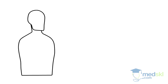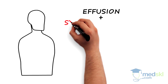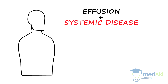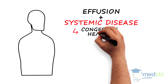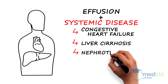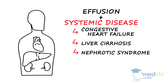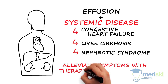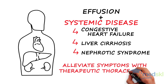If the patient presents with effusion and has a known systemic disease associated with an imbalance in hydrostatic or oncotic pressures — such as congestive heart failure, liver cirrhosis, or nephrotic syndrome — thoracentesis is only required for alleviation of symptoms. This is called therapeutic thoracentesis.